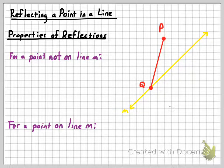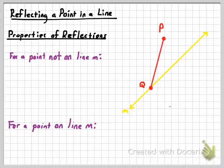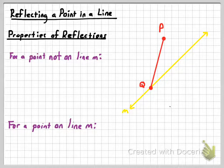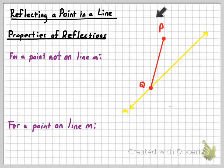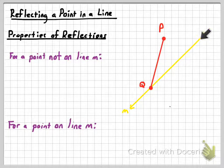A reflection is whenever you find a mirror image of a point in a line. With reflections, you have to have a line of reflection — that's the mirror. Here, we're going to reflect segment PQ in line M, which is going to be our line of reflection.